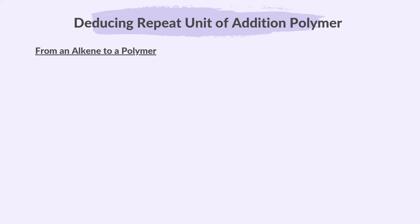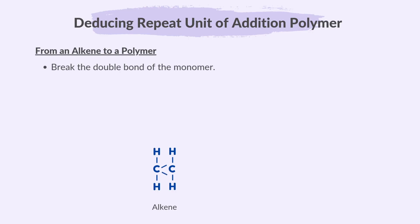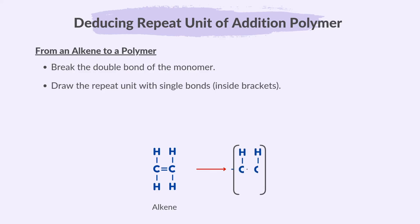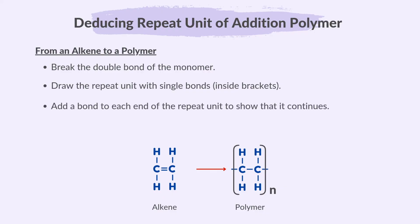To deduce the repeat unit of an addition polymer from an alkene: first, break the double bond of the monomer — in this example the monomer is ethene. Then draw the repeat unit with single bonds inside brackets, add a bond to each end of the repeat unit to show that it continues, and write n outside the brackets to show many repeat units.